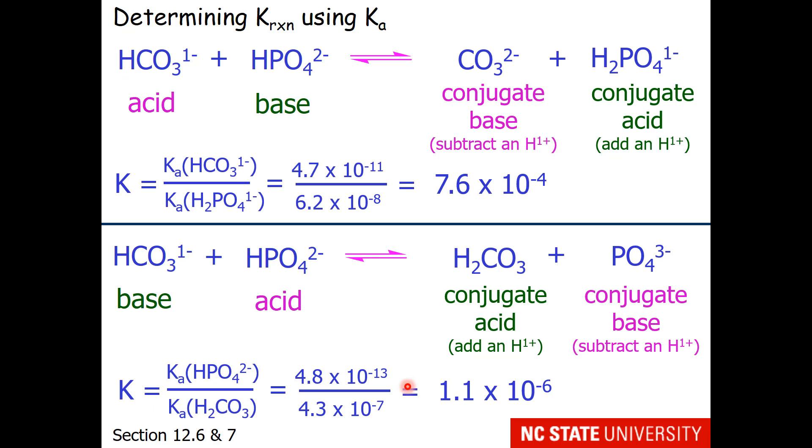Here are our values placed in our calculation for our equilibrium constant for this reaction. And you notice it comes out to 1.1 times 10 to the minus 6. So even though it's not terribly good, the top one is the better reaction, where hydrogen carbonate is the acid and hydrogen phosphate is the base.